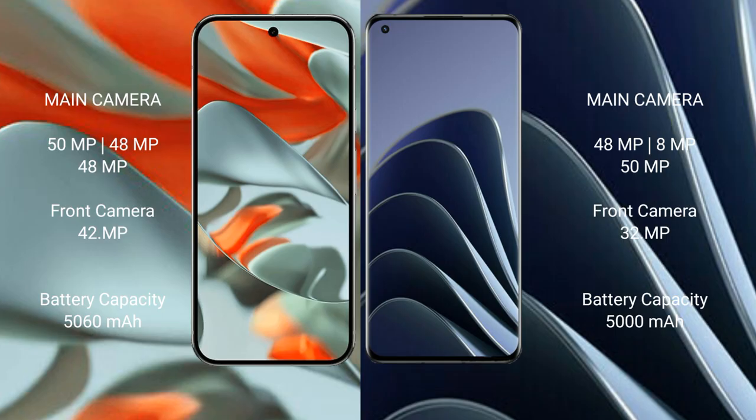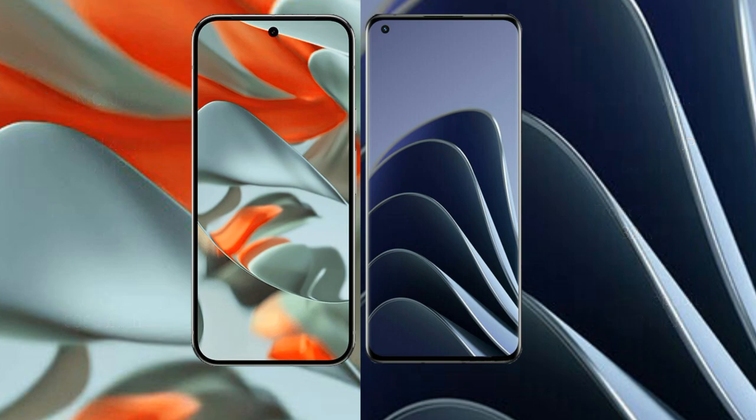Google Pixel 9 Pro XL has a 5060mAh battery with 37W fast charging support. OnePlus 10 Pro has a 5000mAh battery with 80W fast charging support.